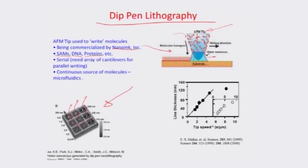A company called NanoInk Incorporated made this process practical. It started as a serial process, but has since been made parallel with multiple tips writing different molecules simultaneously. It can write self-assembled monolayers, DNA, proteins, and so forth. One example illustrates a protein microarray on a roughly 5 micron by 5 micron surface. The line thickness deposited is directly proportional to the inverse of the tip speed — lower tip speed means greater line thickness due to increased dwell time.